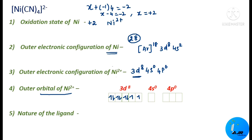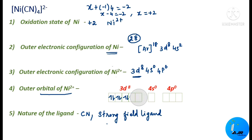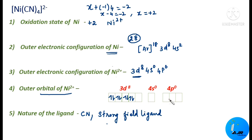However, the ligand here is cyanide, CN⁻, which is a strong field ligand. A strong field ligand will force the unpaired electrons to get paired up. So the unpaired electrons become paired, and there are no unpaired electrons remaining. Since there are no unpaired electrons, d-d transition will not be induced. With no d-d transition, there is no absorption of red light or any other light, so there is no color change. This is why Ni(CN)₄²⁻ is colorless.